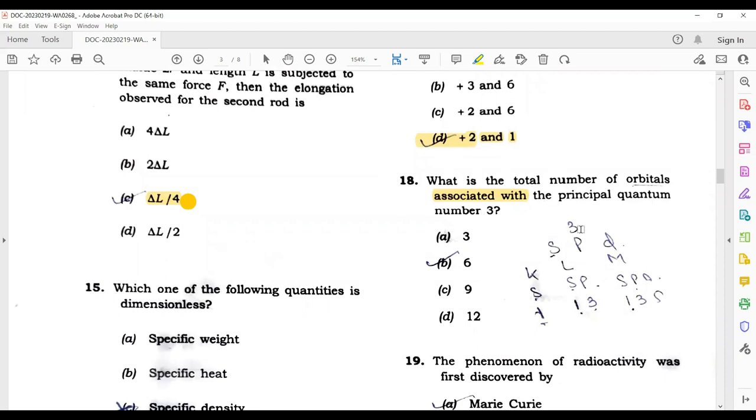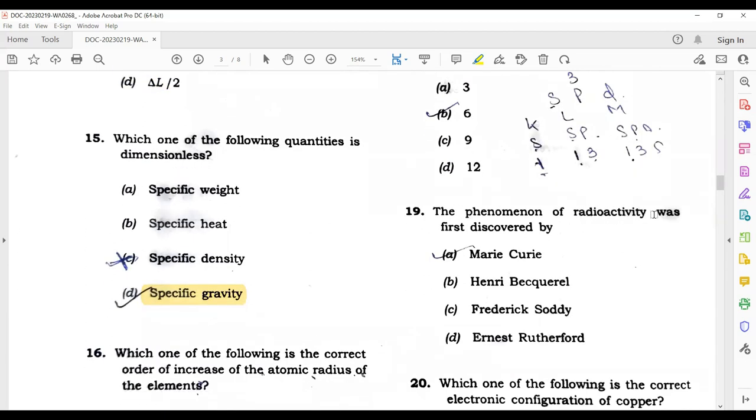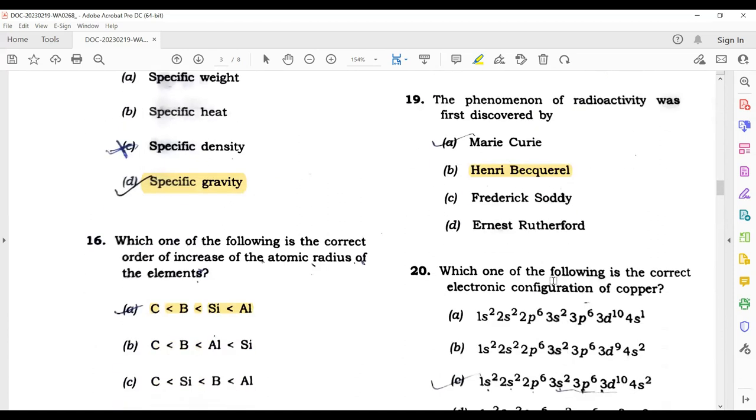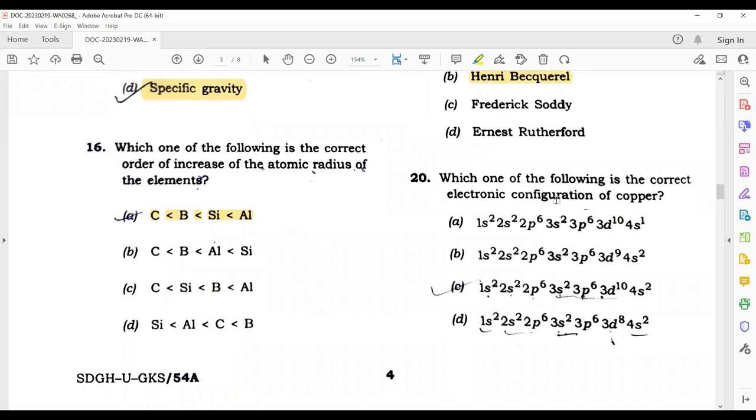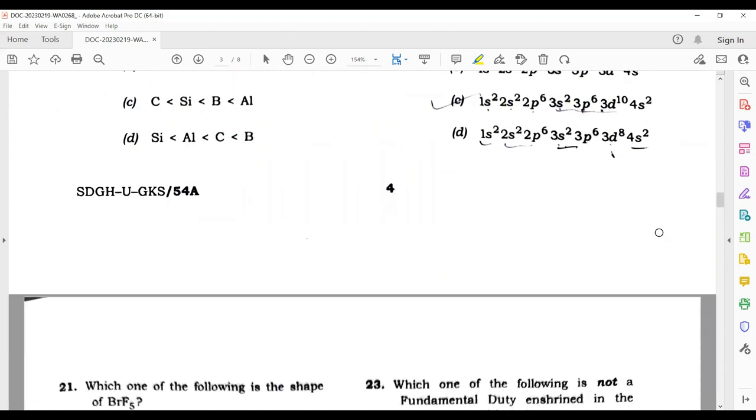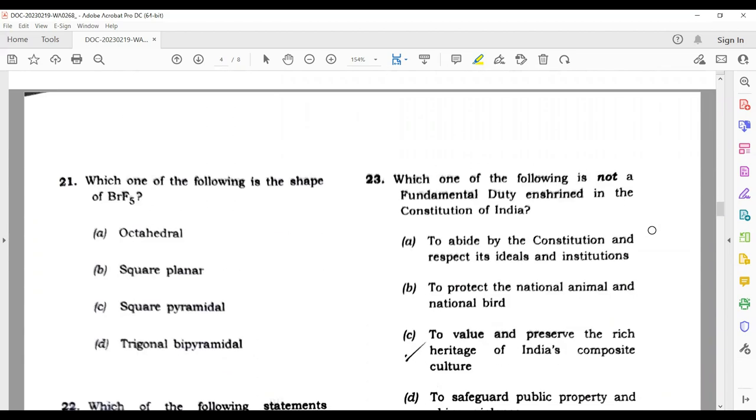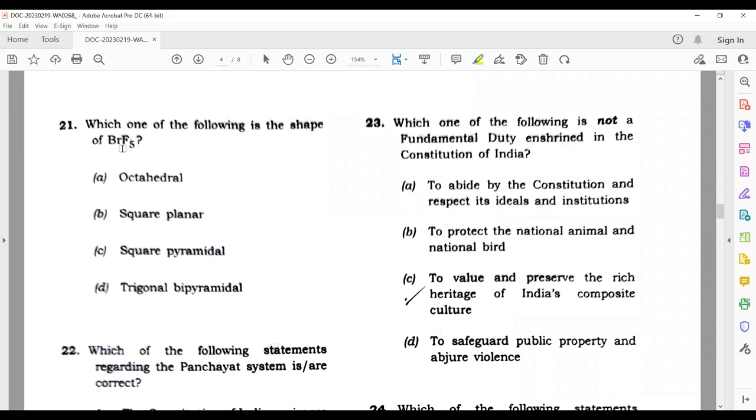What is the total number of orbitals associated with the principal quantum number 3? For quantum number 3, we have s, p, and d orbitals. That's 1 + 3 + 5 = 9 orbitals. The answer is nine. The phenomenon of radioactivity was first discovered by Henry Becquerel. Henry Becquerel discovered it, but Madam Curie won the Nobel Prize twice. Madam Curie is famous for radioactivity because she won the Nobel Prize, but the discovery was first done by Henry Becquerel. Which one of the following is the correct electronic configuration of copper? The correct answer is 3d10 4s1.